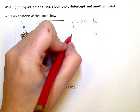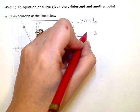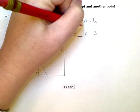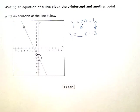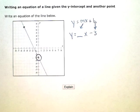And I have y equals, I still don't know the slope, x. So now I need the slope number. Now I have a graph here, so I just need to get the slope off the graph.